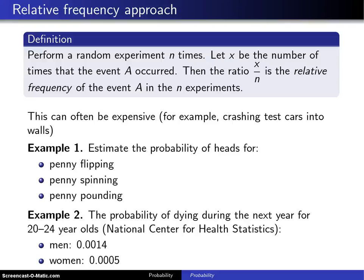The first approach for calculating probabilities is known as the relative frequency approach. You perform a random experiment n times — typically n is a large number, but it doesn't have to be. Let x be the number of times that the event A occurred. Then the ratio x divided by n is known as the relative frequency of the event A in the n experiments.